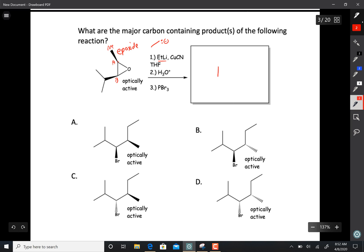When it does so, it does a backside attack. There's the new ethyl group, and that forces the wedge that was going to the left to now go to the right. That breaks open the epoxide, and the other stereochemistry stays the same.